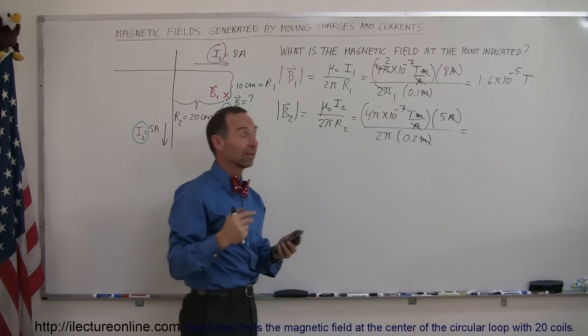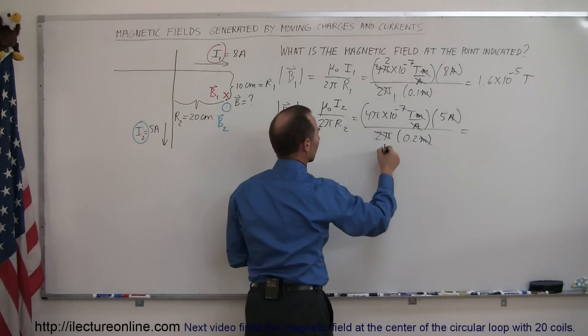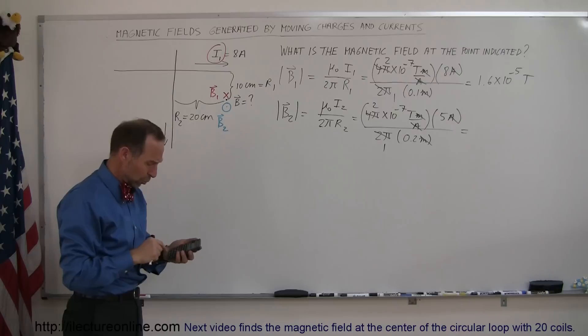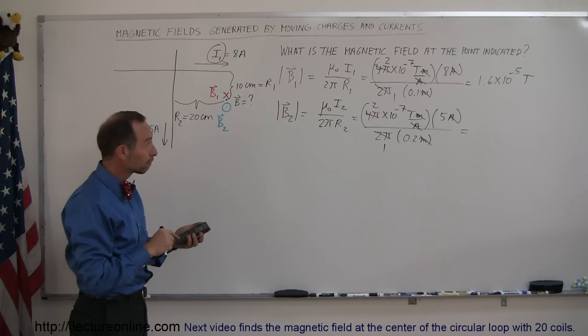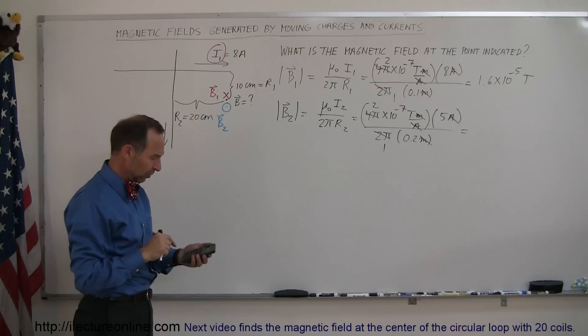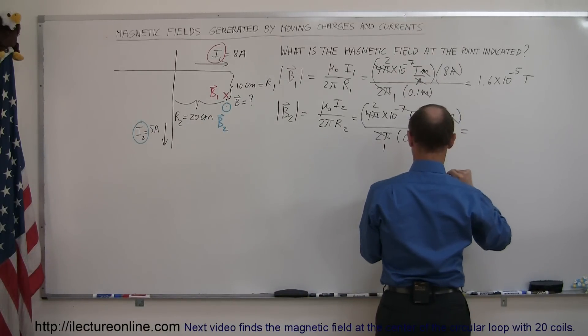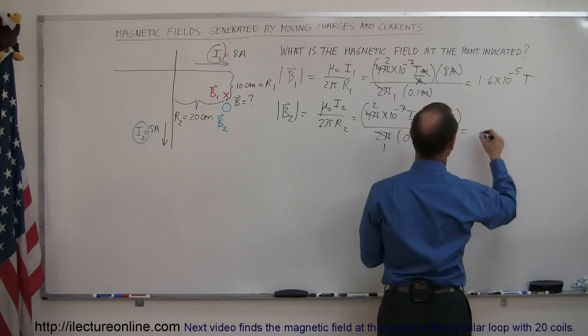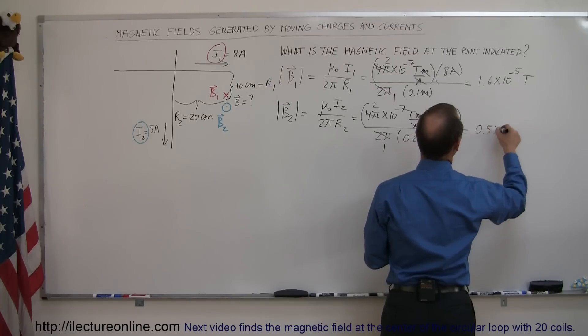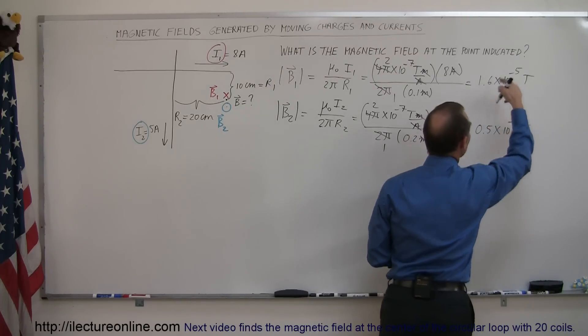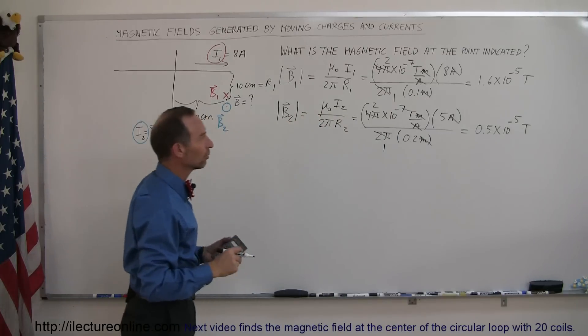Let's see how big that is, and again, this cancels out, makes that 2. So 2e to the 7th minus times 5 divided by 0.2 equals, and we get 5. 5 times 10 to the minus 6, or 0.5 times 10 to the minus 5 teslas, to keep the same exponential there so we can compare the two.